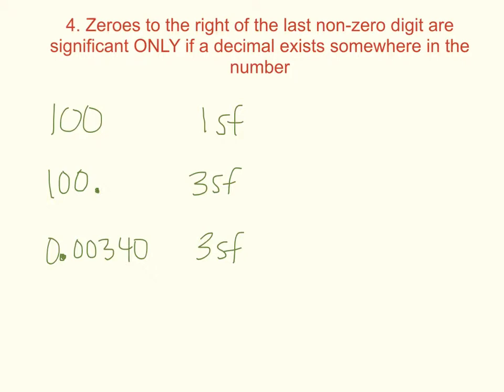It's also something like this. Zeros to the right, if there's a decimal anywhere, they all matter, so this would be four sig figs.